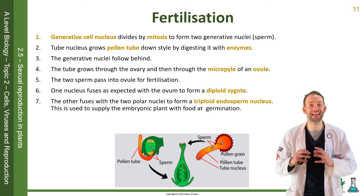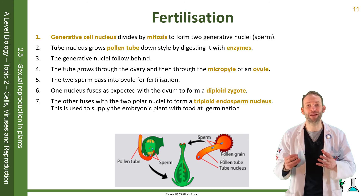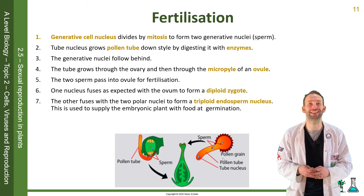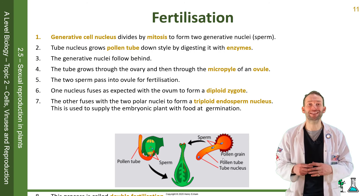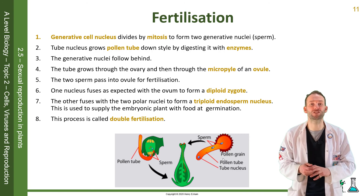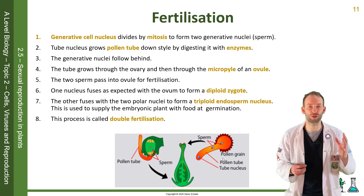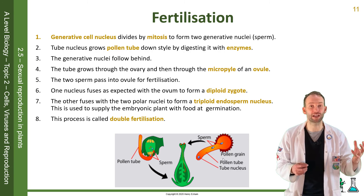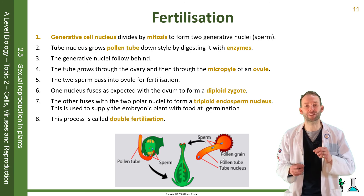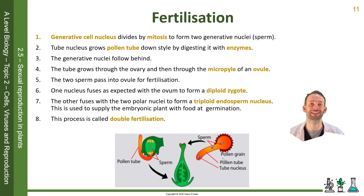The triploid endosperm nucleus is used to supply the embryonic plant with food at germination — this is how the seed makes its own food. This process is called double fertilisation. There are two fertilisations occurring: the first is the nucleus fusing with the ovum to make a diploid zygote, and the second is that other nucleus fusing with the two polar nuclei to make the triploid endosperm nucleus.